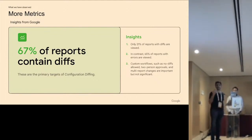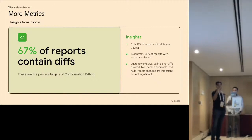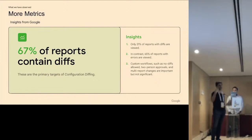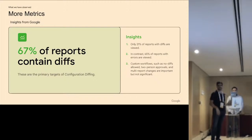Something interesting to note: of all reports that contain diffs, only 21% are actually viewed. In contrast, 65% of reports are viewed when we've flagged an error during diff generation. This is something we're taking into account — how we can add more automation to raise the warning level beyond just build errors, and whether domain-specific analysis can make users look more closely at diff reports. We also support custom workflows, such as blocking diffs for specific directories unless closely reviewed.